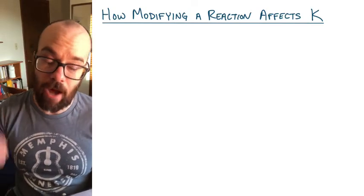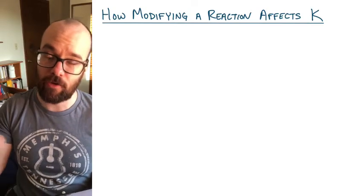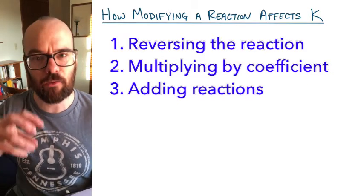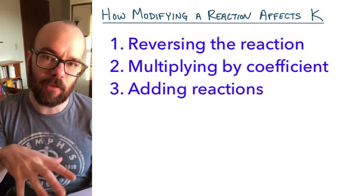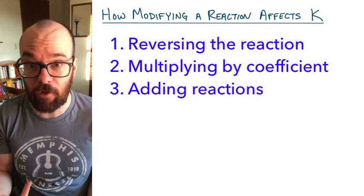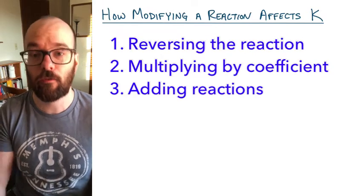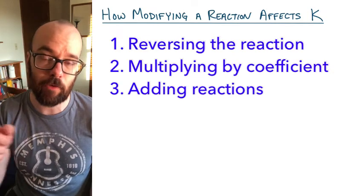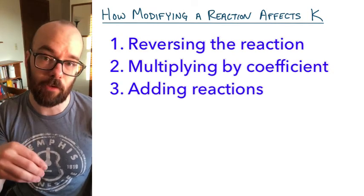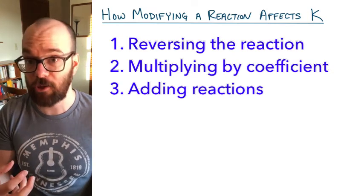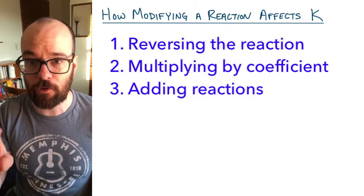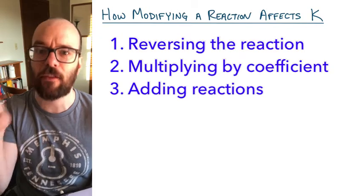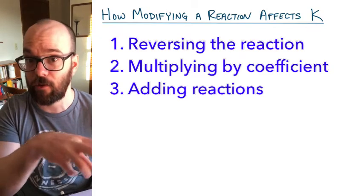In this video, we're looking at how modifying a reaction — such as reversing the reaction, multiplying by a coefficient, or adding two reactions together — affects the K value or equilibrium constant for that reaction. By the end of this video, we're going to have three rules: one for reversing, one for multiplying by a coefficient, and one for adding reactions together. For each of those three, I'm going to go through an example that shows you why that modification has the effect on the K value that it does.